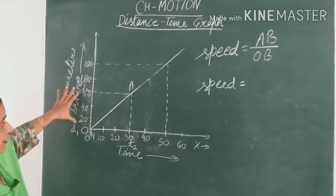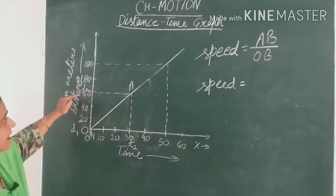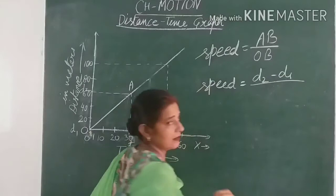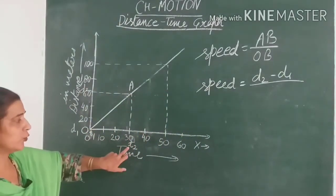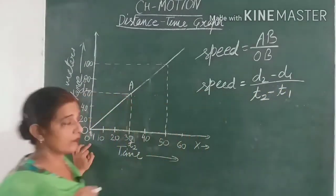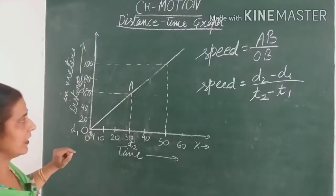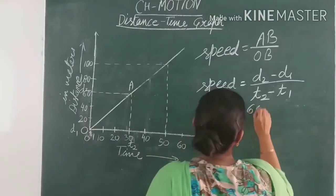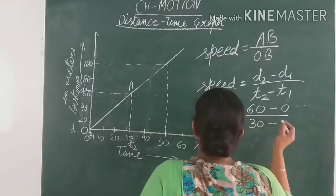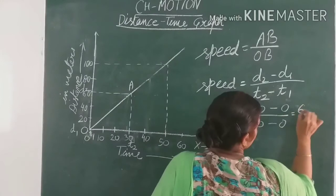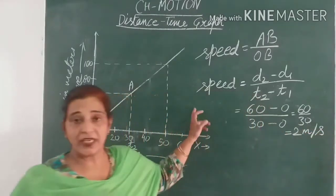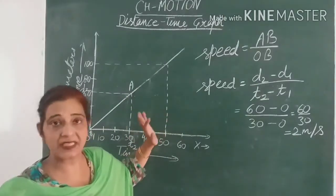So now the distance covered, we will easily find out by d2 minus d1. So d2 minus d1 upon t2 minus t1. What values do we have? d2 is 60, d1 is 0, t2 is 40, t1 is 0. This will give us 60 upon 30 which is equal to 2 meters per second. So here the speed is 2 meters per second.